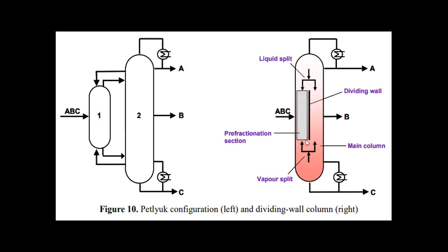In the pre-fractionation section, fractionation occurs before the main distillation area. Vapors condense in the condenser and the reflux returns to the distillation column, where the liquid splits into two streams: one going to the pre-fractionation section and one to the core section. Similarly, vapors generated in the reboiler split into two streams — one going to the pre-fractionation unit and one to the core distillation column.